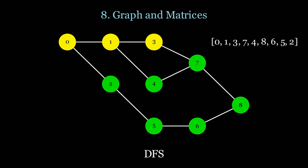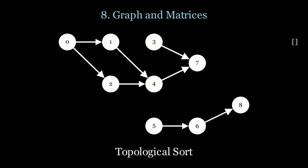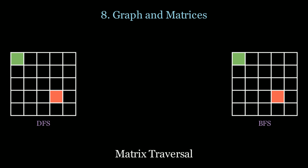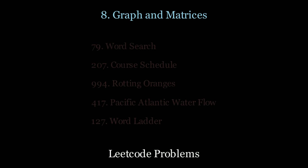In BFS, we scan level by level, similar to binary tree traversal. Topological sort uses a directed acyclic graph where each node has prerequisites — for example, before we take node 1 we need node 0; before node 7 we need node 3. We use DFS and keep track of the last nodes visited, adding them to the end of the list. In matrices, DFS visits each node to find the longest path, while BFS visits children nodes first. For more practice, look at the following LeetCode questions.